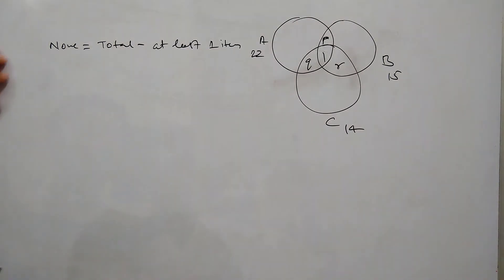So total is given as 50, there are 50 teachers, and those who own at least 1 item is A union B union C.